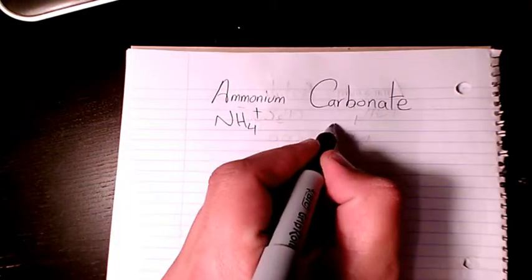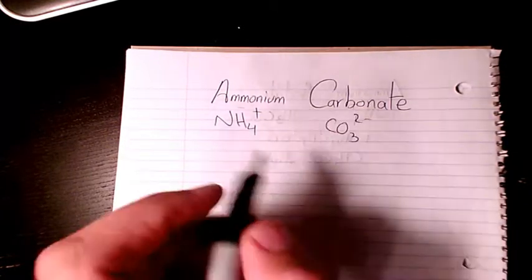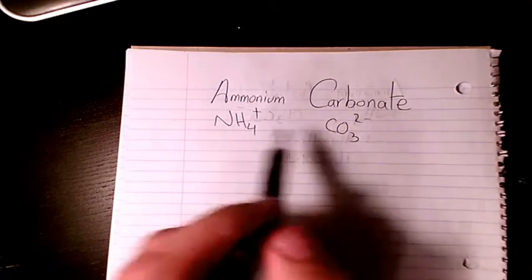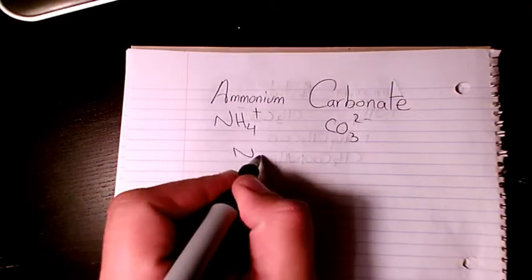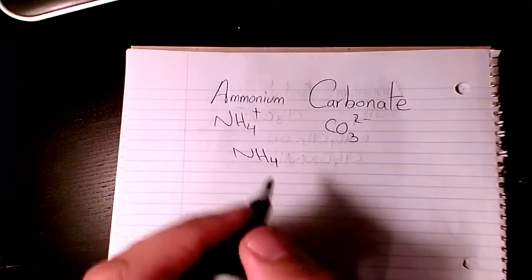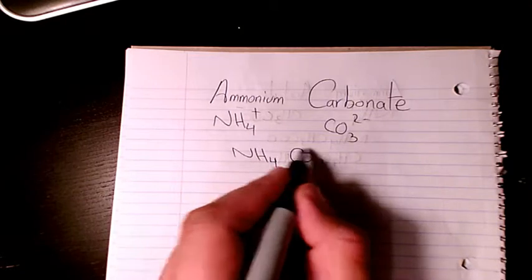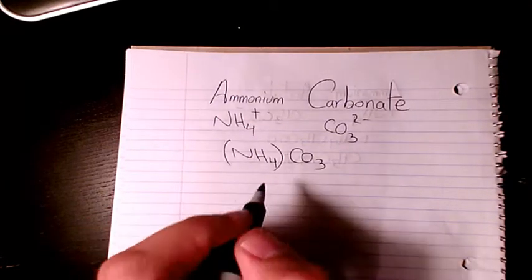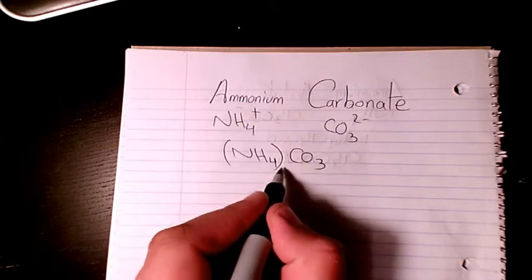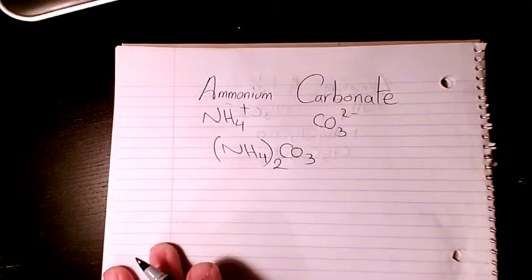Carbonate is CO3 2 minus. The charge is negative 2, and the charge here is positive 1. When you write it, it's going to be NH4 CO3. Since the 2 is going to be for this one here, we're going to write NH4 2 CO3. So that's basically the molecular formula of ammonium carbonate.